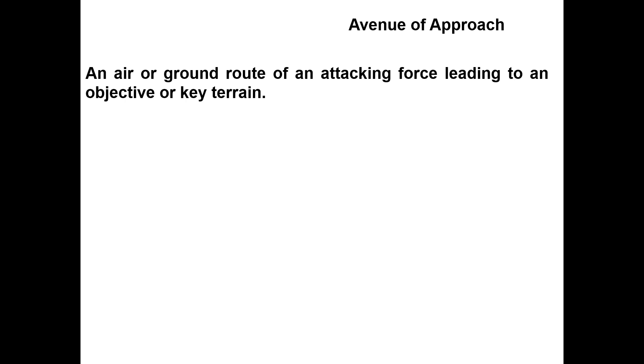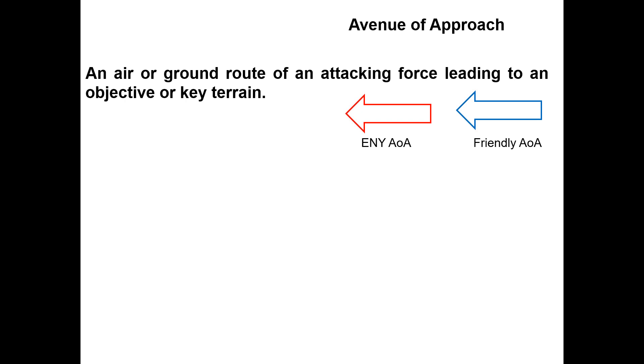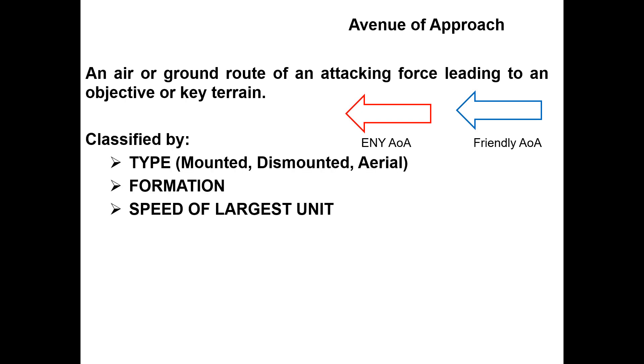An avenue of approach is an air or ground route of an attacking force leading to the objective or key terrain. I have to emphasize that if it's not leading to an objective or leading to key terrain, it is not an avenue of approach. The symbol uses red for enemy and blue for friendly.